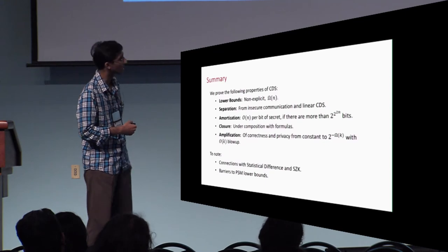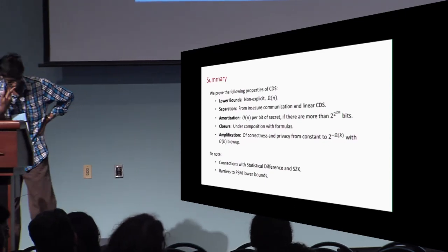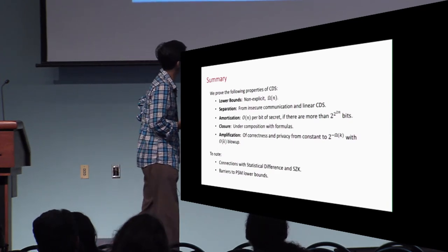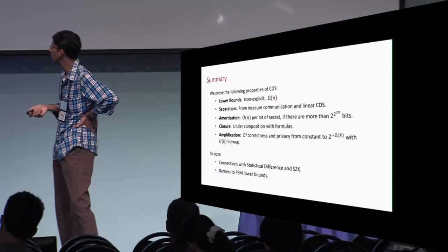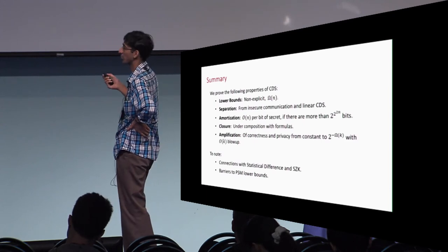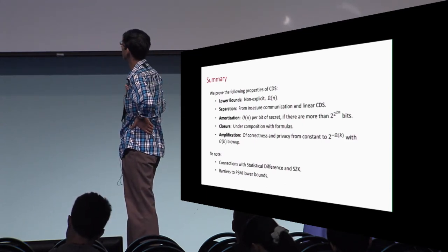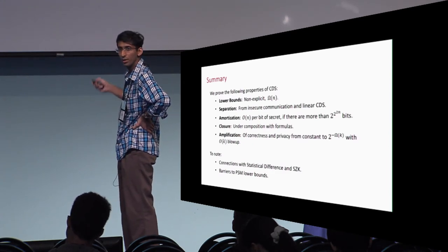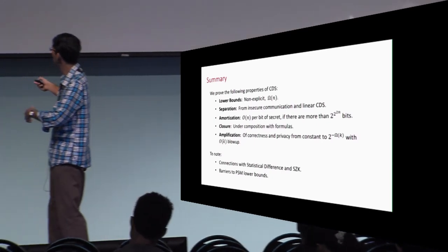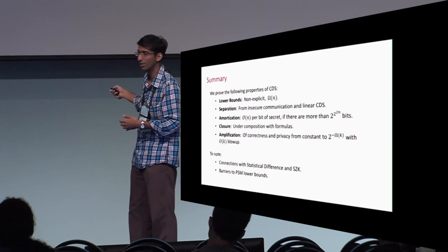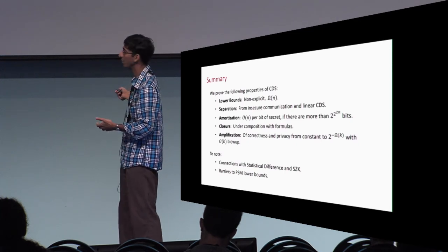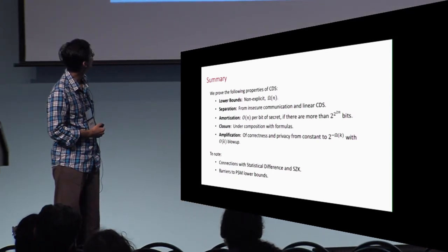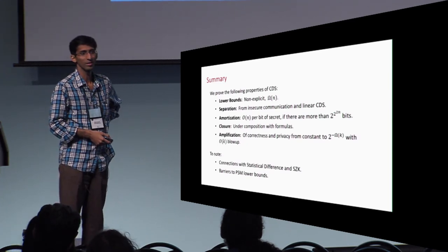Finally, there is an amortization theorem: if you have one predicate and a very long secret, the number of communication bits per secret bit is better than just naively repeating the best known protocol independently for each bit. So we have this collection of results about different aspects of CDS. The key theme is the connection to the statistical difference problem and statistical zero-knowledge. Open questions include whether similar connections exist for the private simultaneous messages model, and whether new techniques can give better lower bounds for CDS — since the best known techniques for lower bounding PSM already lower bound CDS, and PSM is believed to be much more expensive.